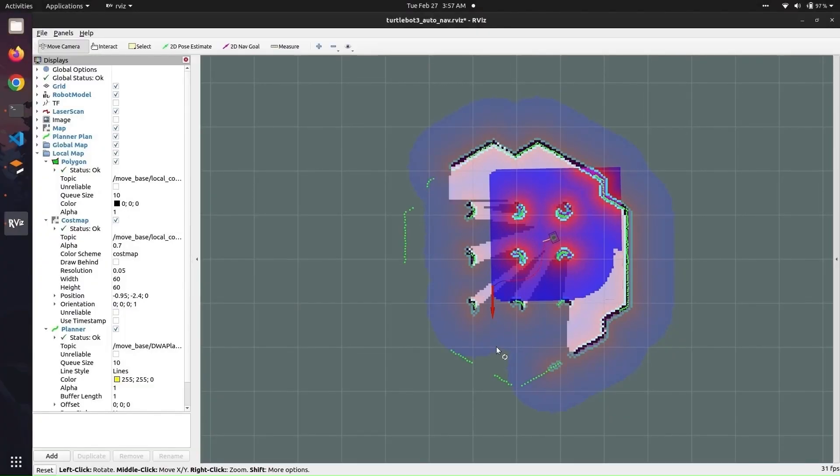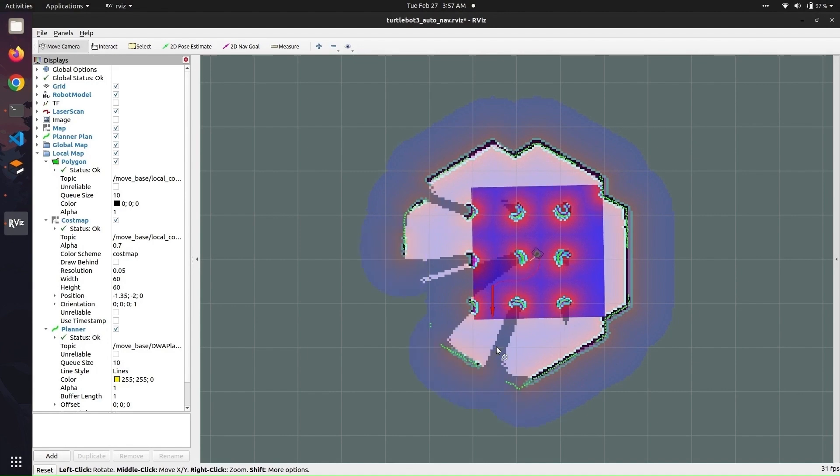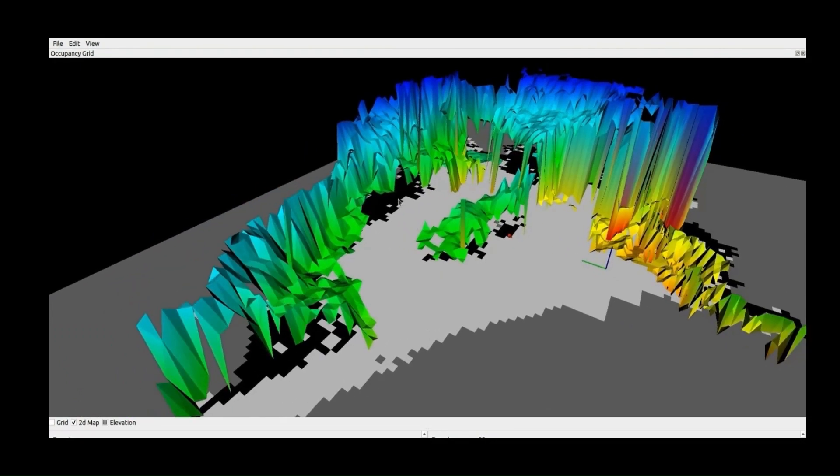For navigation, we have implemented Hybrid A-Star as our Global Planner along with Dynamic Window Approach for Local Planning. This is complemented by a probabilistic elevation map enabling our rover to navigate diverse and challenging terrains.